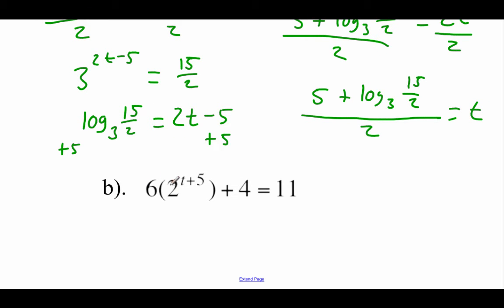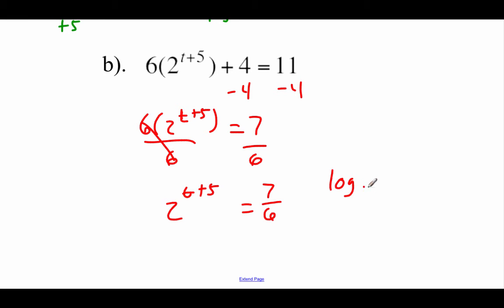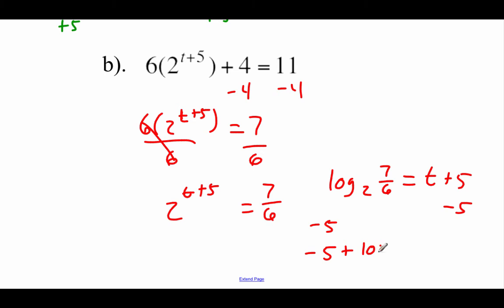Next one says 6 times 2 to the power of (t plus 5) plus 4 equals 11. Subtract 4 from both sides to get 6 times 2 to the (t plus 5) equals 7. Divide by 6 on both sides to get 2 to the power of (t plus 5) equals 7 sixths. Rewriting in logarithmic form: log base 2 of (7/6) equals t plus 5. Subtract 5 to get t equals negative 5 plus log base 2 of (7/6).